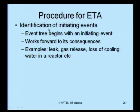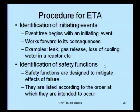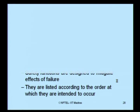The first step is to identify the initiating event. The event tree begins with the initiating event and the work is forwarded to its consequences. For example, the initiating event can be a leak, a gas release, or a loss of cooling water in a reactor. The second step is to identify the safety functions — those functions designed to mitigate the effects of failure. If there are many safety functions, they are listed according to the order in which they are intended to occur.